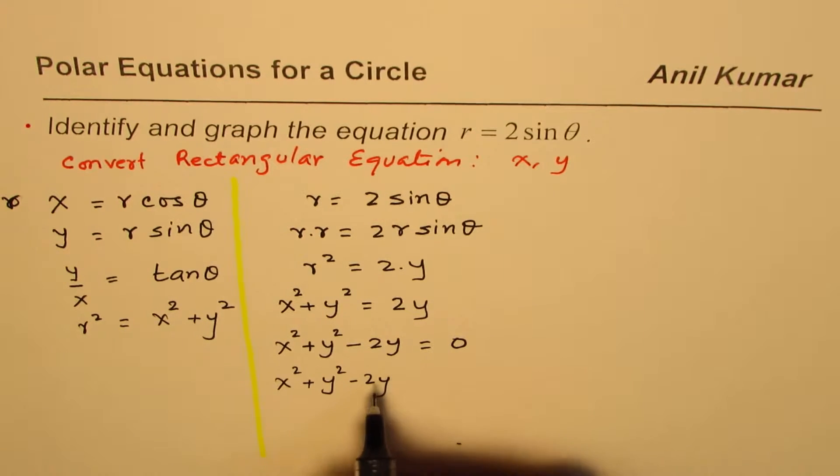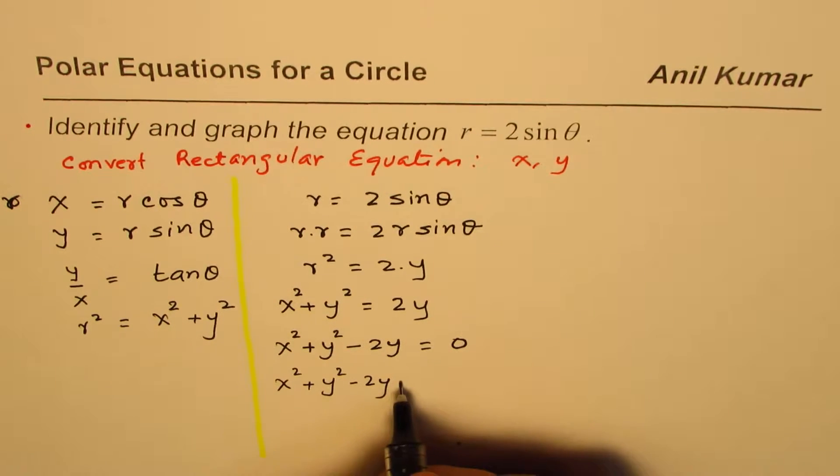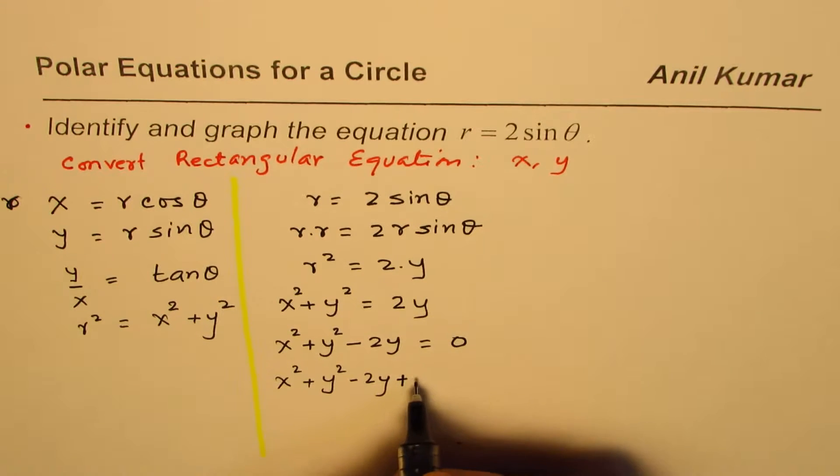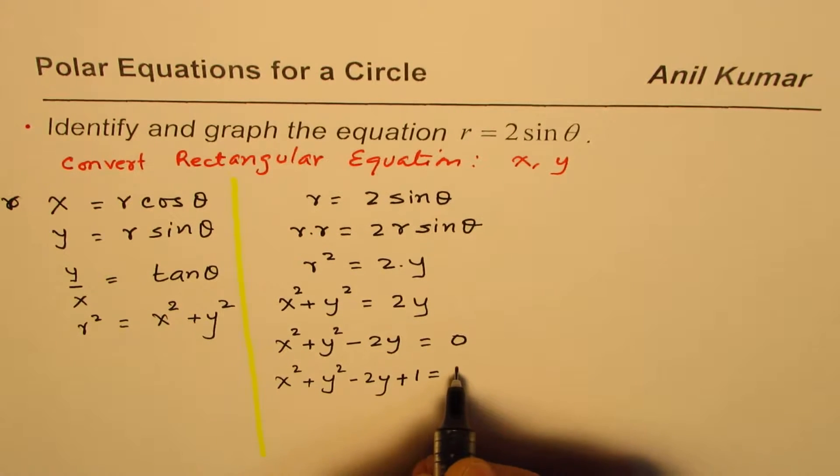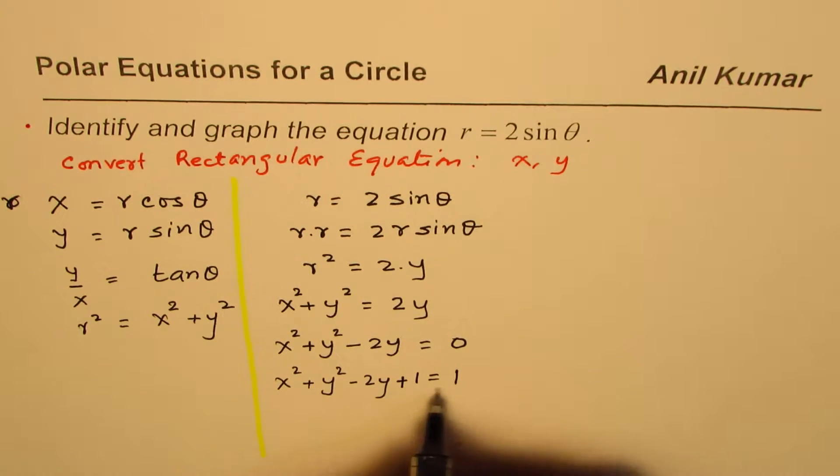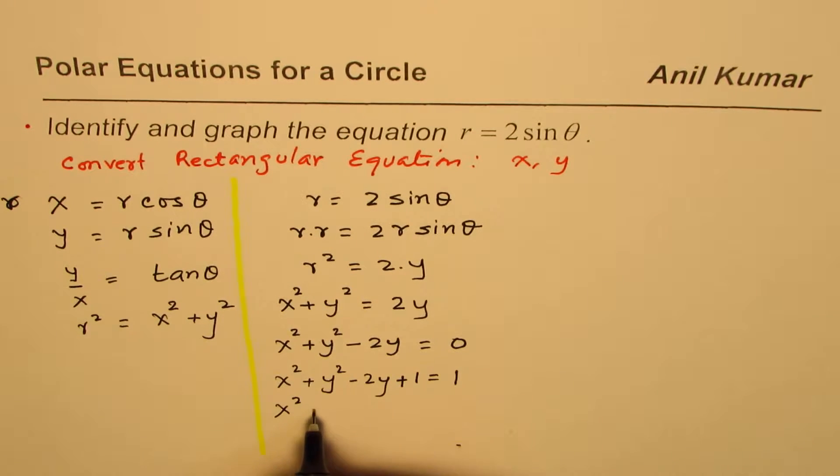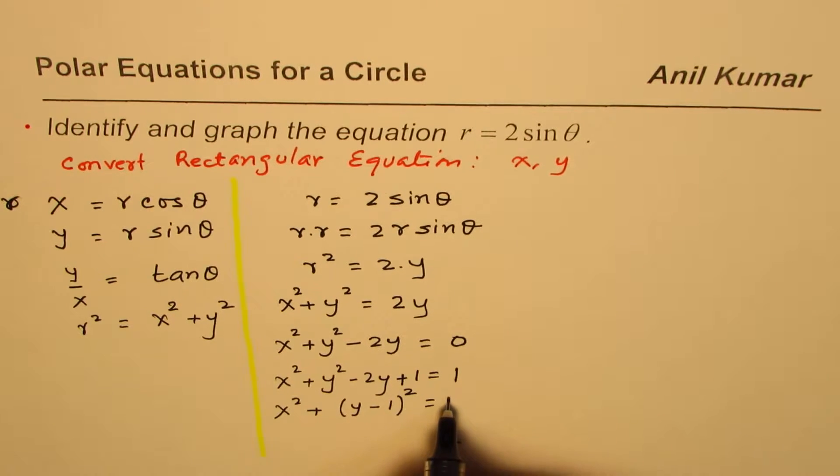We get x square plus y square minus 2y. How do we complete it? Half of 2 is 1. Add 1 on both sides. So if I add 1 on both sides this is what I get.